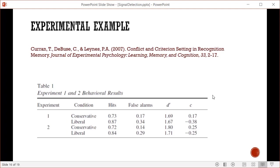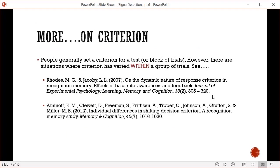As an experimental example, my colleague Tim Curran did experiments creating two conditions - conservative and liberal. The D prime is statistically equivalent with no significant difference in both experiments. But the C values are different: the conservative condition has a positive C value, while the liberal condition has a negative C value, which maps onto signal detection theory.